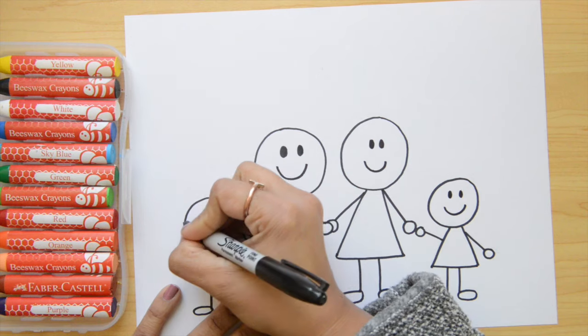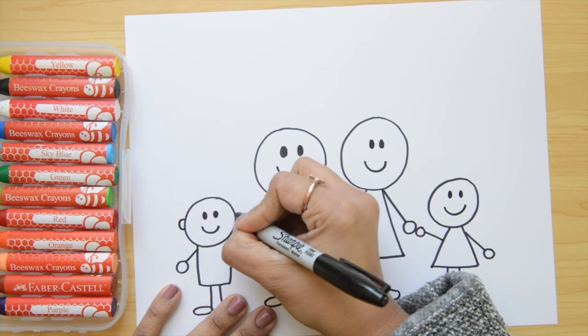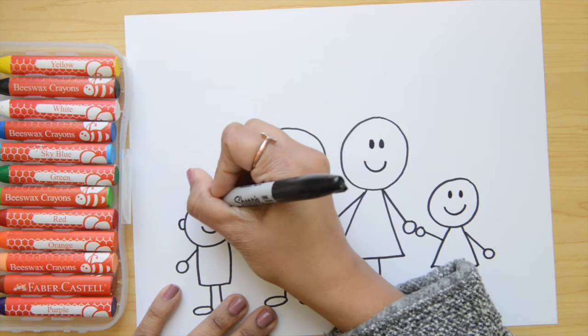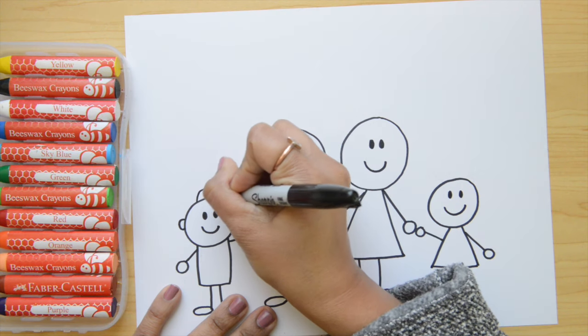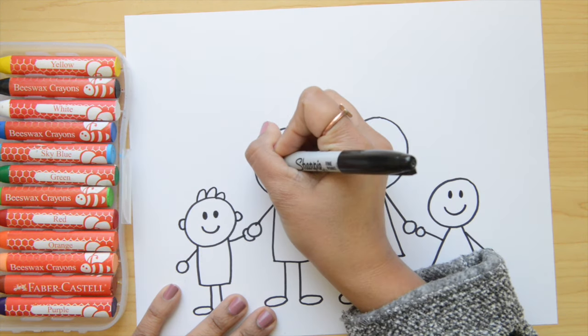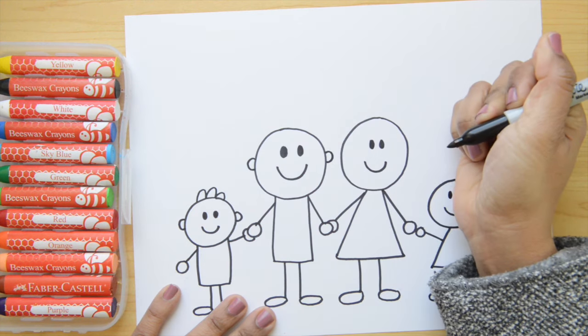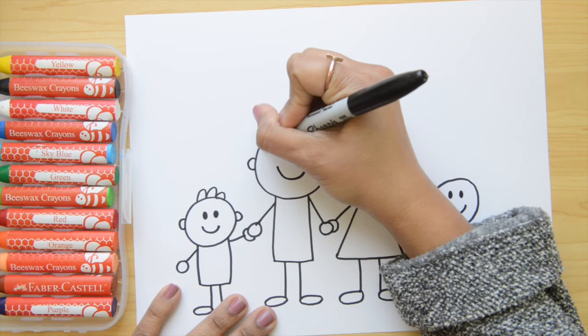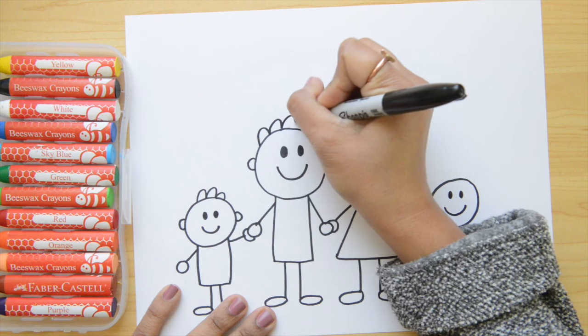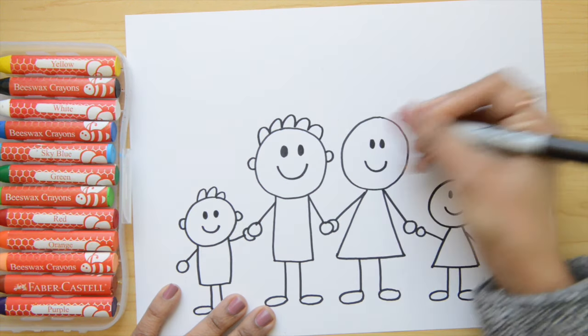Now, we need some ears. So I'm gonna do C shapes on the sides of their heads. And for hair, I'm gonna do upside down letter U's on the top. So let's do it with dad. C shapes. And for dad, I'm gonna do a little bit more hair. Let's put a little bit more U shapes on the top.